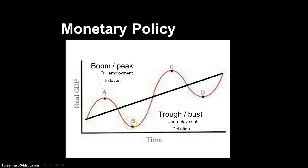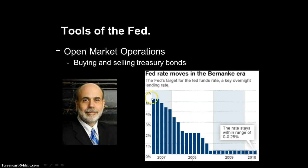Buying treasury bonds also lowers interest rates, making it easier to borrow money. Here you can see Ben Bernanke and a graph of interest rates the Fed has controlled over the last four years during this recessionary period. They started at about five and a half percent and have been dipping steadily down to the lowest they've ever been — between zero and a quarter percent for the last four years — with the whole purpose of encouraging banks and businesses to borrow and loan money. When money is flowing through the economy, it speeds up and grows the economy. The Fed does all of this mainly through open market operations by buying T-bonds, which puts money into the economy.